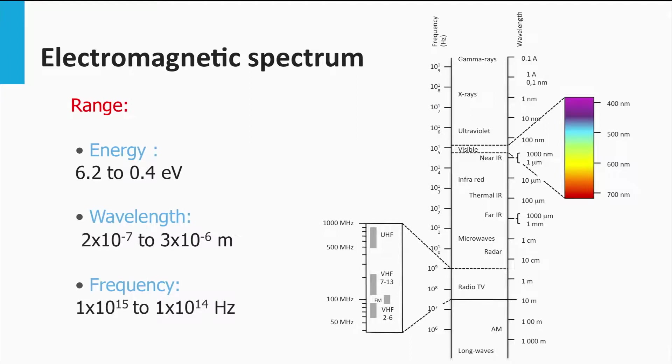Electromagnetic waves exist in many spectral ranges. The visible light spectrum, which comprises the electromagnetic waves we can see with our human eyes, are only a tiny part of the entire spectrum. The visible spectrum ranges from wavelengths of 400 nm up to 700 nm, which corresponds to frequencies in the order of 10 to the 15 Hz.